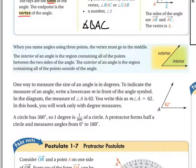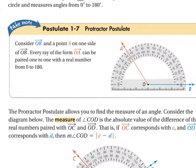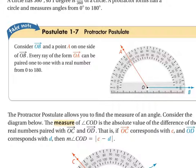We will use protractors in this class — you do not need to go out and buy one; I will provide one for you to keep. Our protractor postulate is the exact same concept as the ruler postulate for segments. The only difference is that rather than measuring segments with a ruler, we're measuring angles with a protractor — but pretty much everything else is the same.